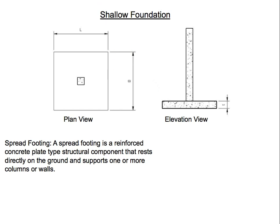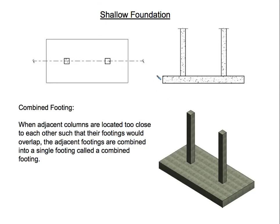Now, what happens when you have two columns that are very close to each other? You're going to have a combined footing. When two columns are very close to each other, their individual footings can be combined together into a single combined footing.